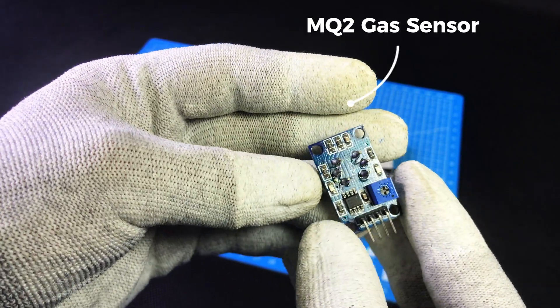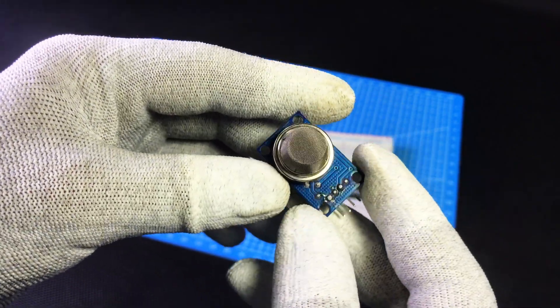MQ2 gas sensor. It detects gas or smoke. If there is a gas leak, it sends a signal.